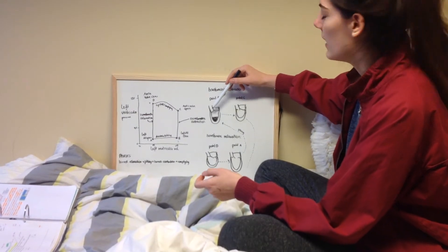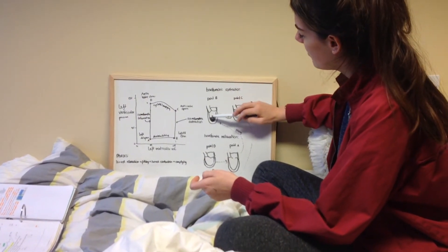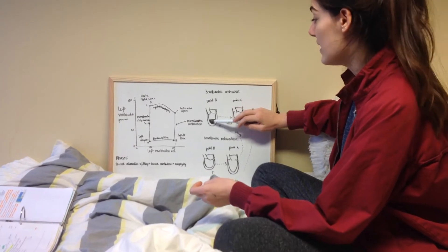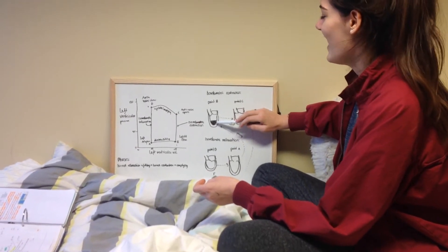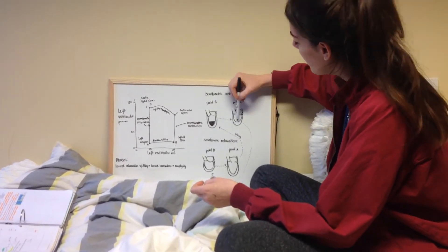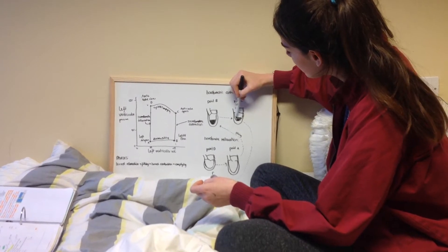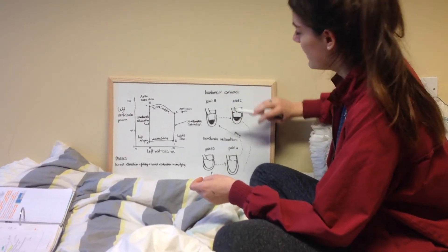As will the aortic valve. The ventricular muscle will contract, but the volume will stay the same, therefore the pressure will increase.